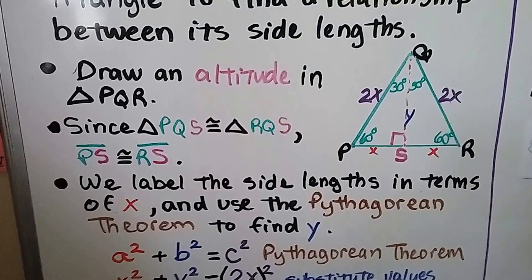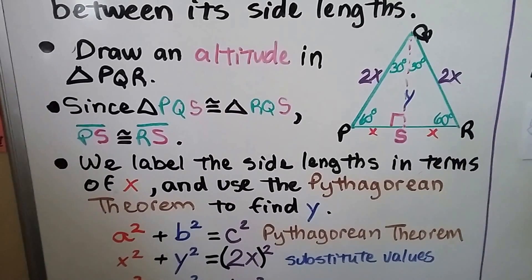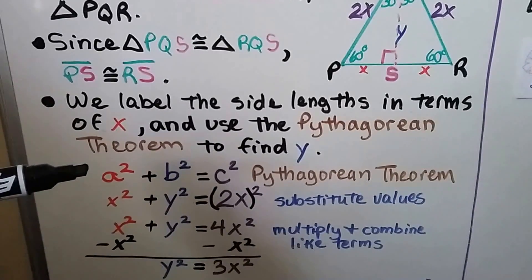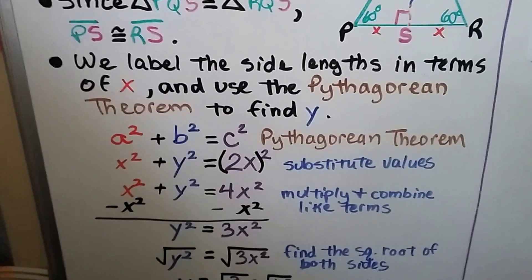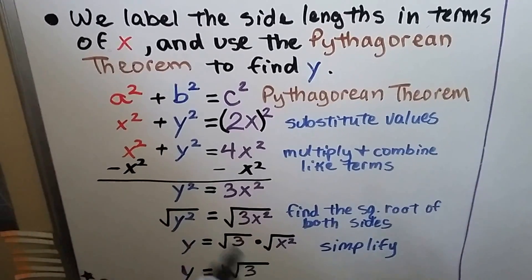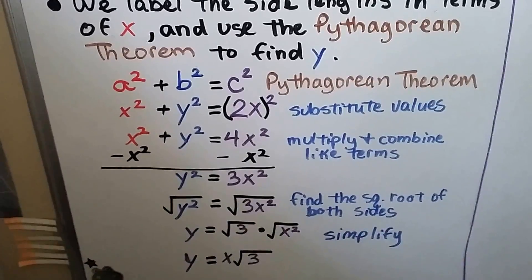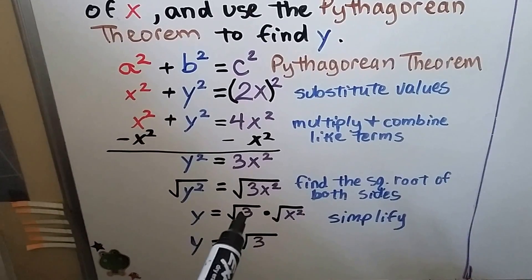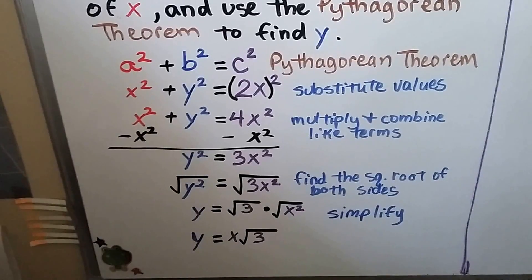We label the side lengths in terms of x: the shorter leg is x, and the hypotenuse is 2x. We use the Pythagorean theorem to find y, our altitude and longer leg. The Pythagorean theorem is a² + b² = c², so we get x² + y² = (2x)², which gives x² + y² = 4x². Subtracting x² from each side gives y² = 3x². Taking the square root of both sides, y equals x times the square root of 3.